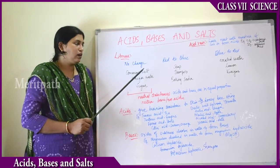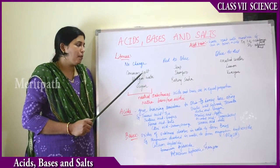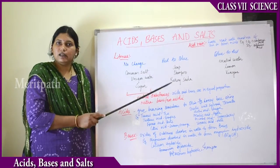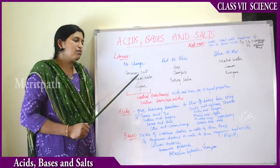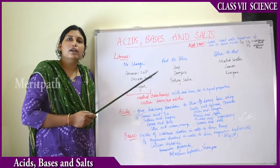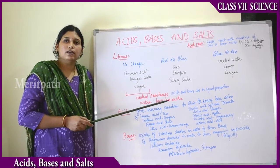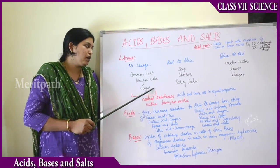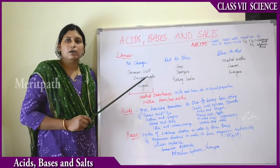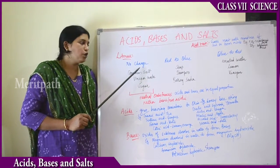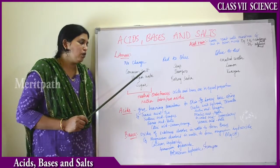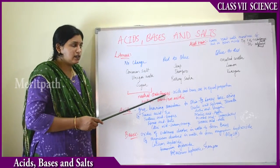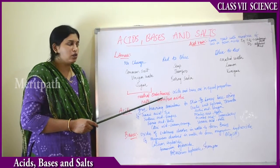When litmus is added to common salt, water, and sugar, these substances do not show any change in color. Vinegar mixed with water is completely diluted, so it is neither acidic nor basic. These substances are known as neutral substances — they are neither acidic nor basic in nature.